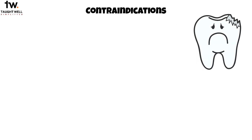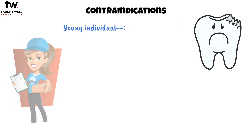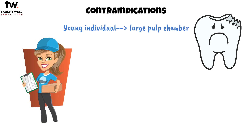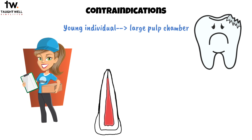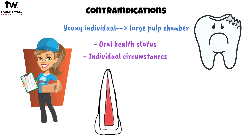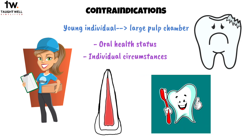Contraindications for proximal stripping involve certain considerations. It is generally avoided in patients who are susceptible to dental caries. Additionally, proximal stripping is not recommended in young individuals due to the possibility of having large pulp chambers in their teeth, which may cause complications. Therefore, careful evaluation of the patient's oral health status and individual circumstances is necessary when deciding to proceed with proximal stripping as a treatment option.